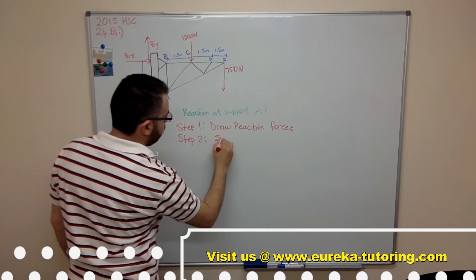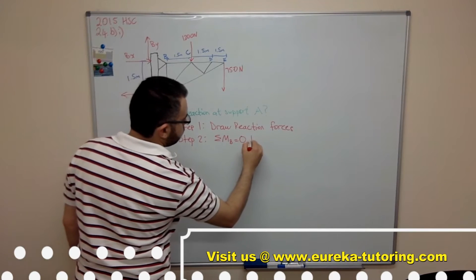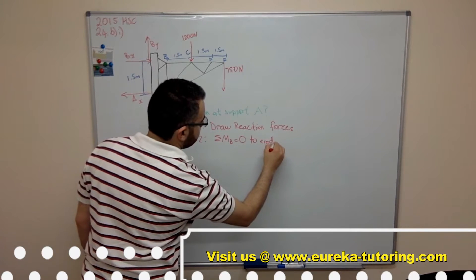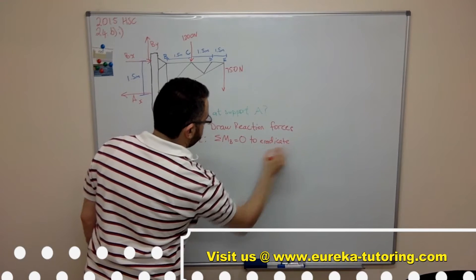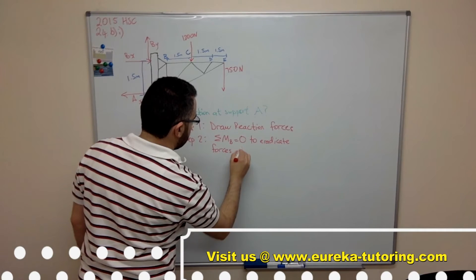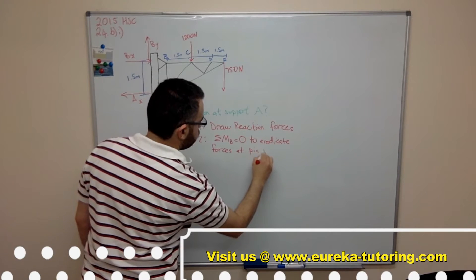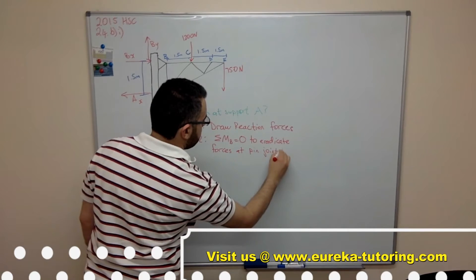So next step: sum of moments about B equals zero to eradicate forces at pin joint B.